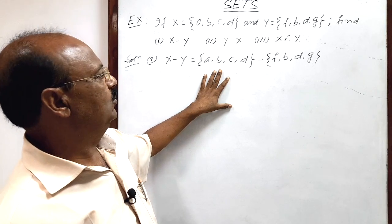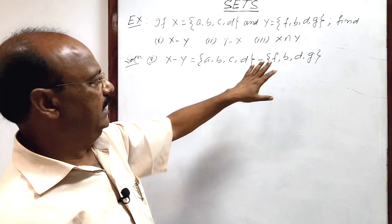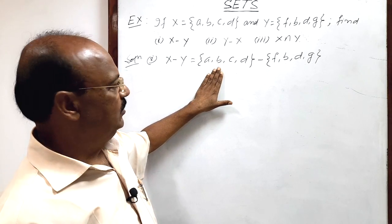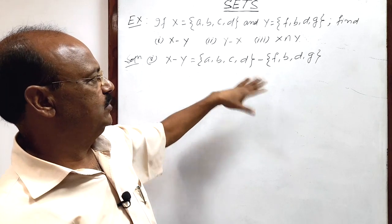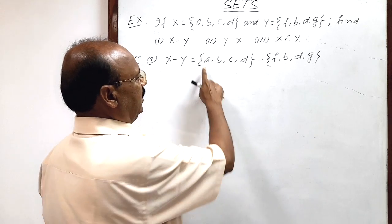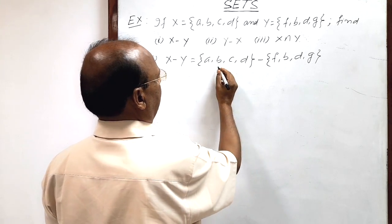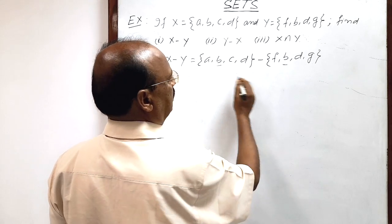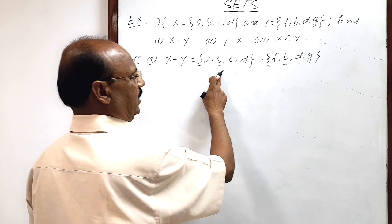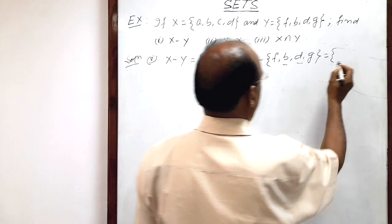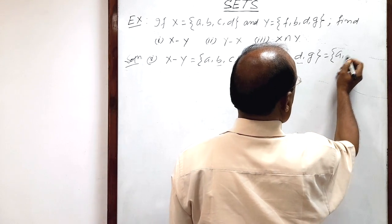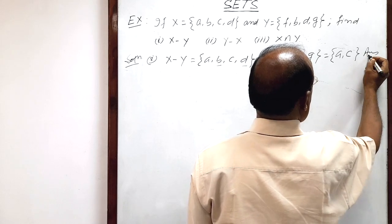It is very simple — we have to remove the common elements from set X. Let us check which elements are common in both sets. A is only in X, not in Y. B is common, and D is common. So b and d will be removed from X, and we get a set with elements only a and c. That is the answer.